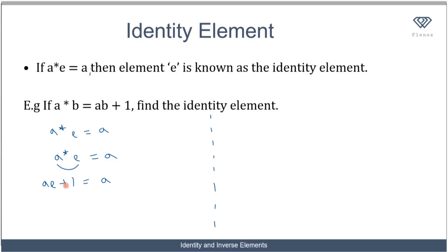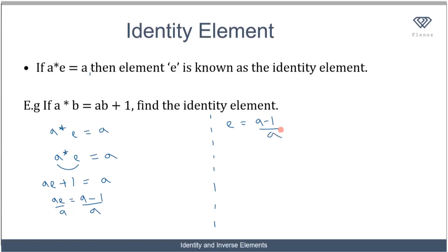Then I make e the subject of the formula. So ae equals a minus one. If I divide both sides by a, I have my identity element e equals (a minus one) over a.